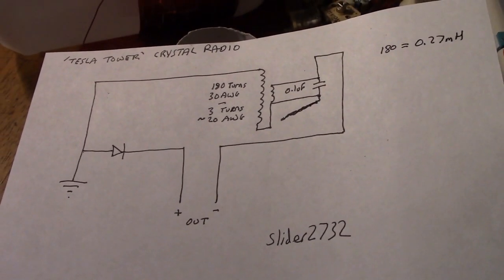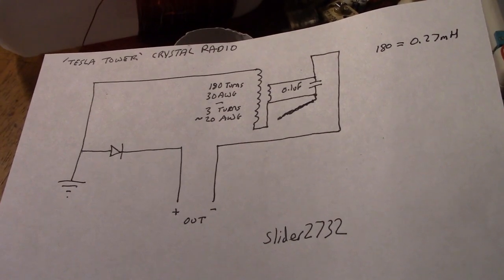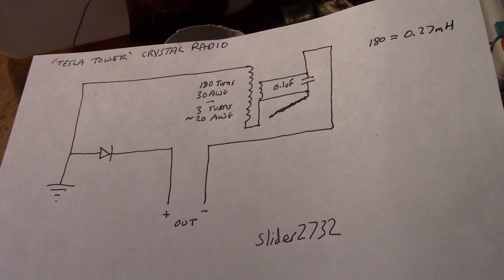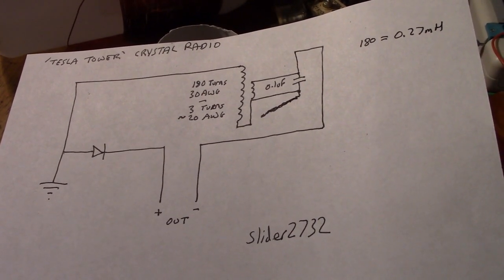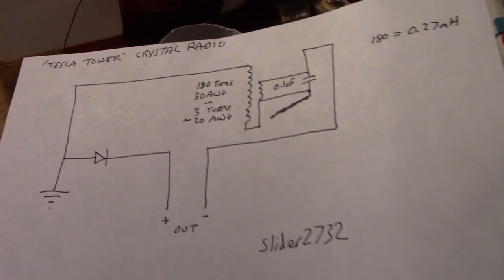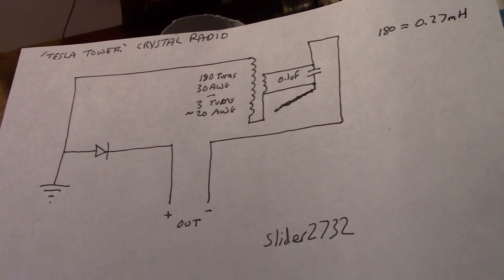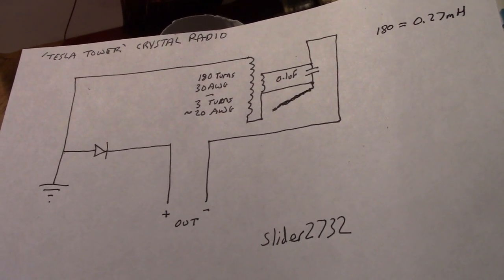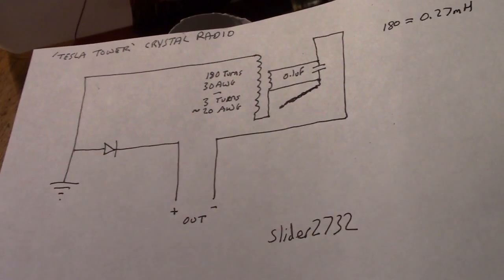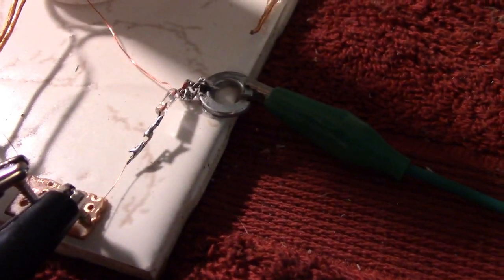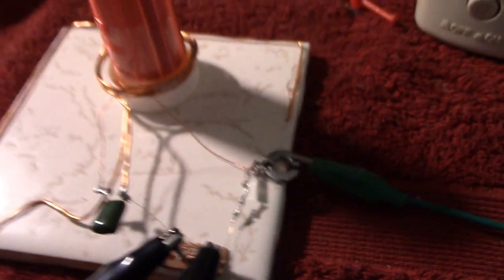But the coil itself measures 0.27 millihenrys, which I think is where 1490 kilohertz AM is. So there we are, that is basically it: 180 turns of 30 AWG, three turns of about 20 AWG, and this diode here is a regular germanium, it's an old 1970s thing rescued from an old circuit board.